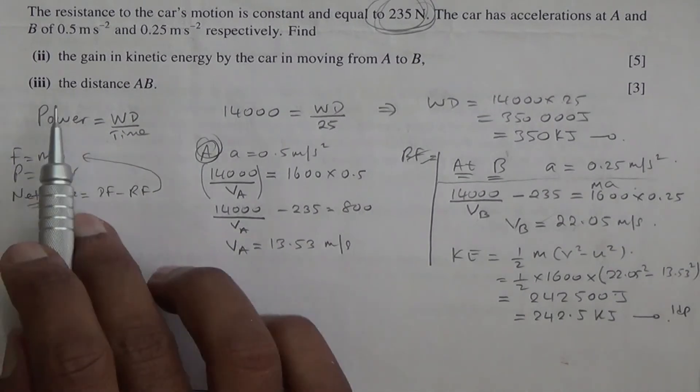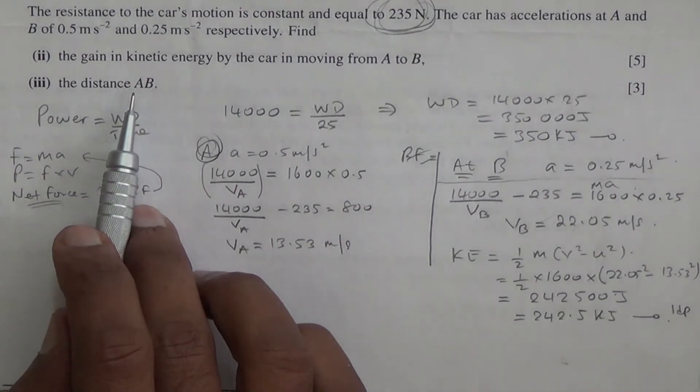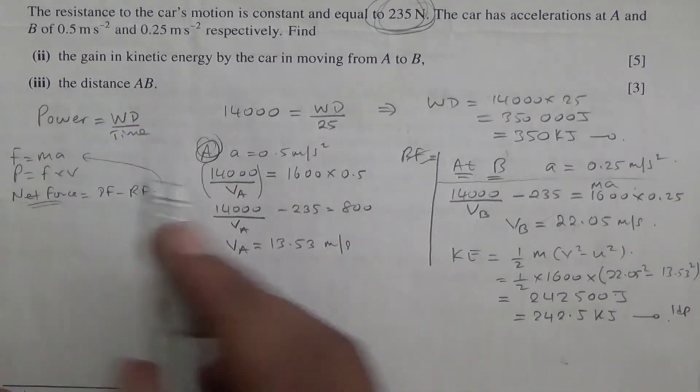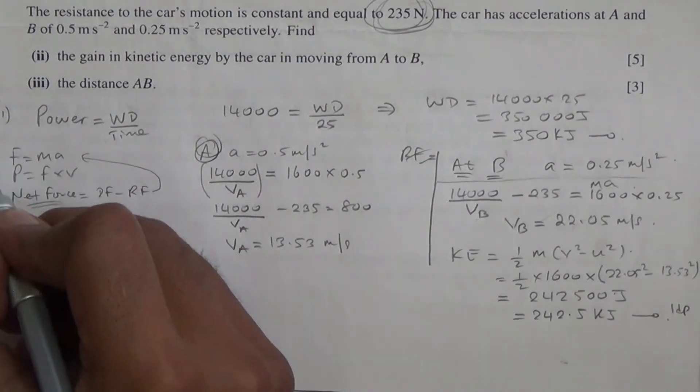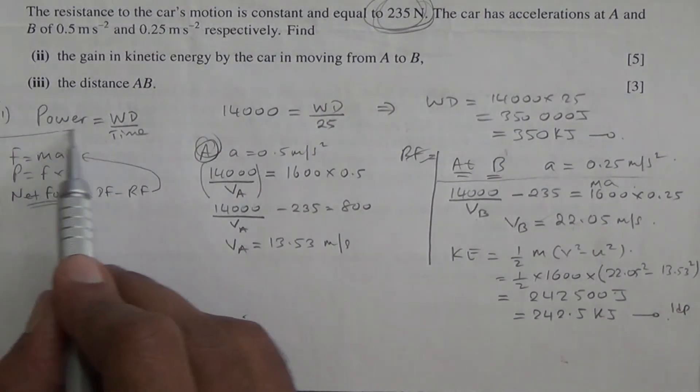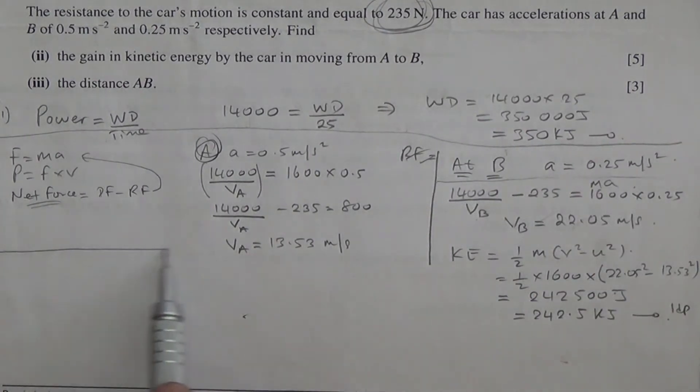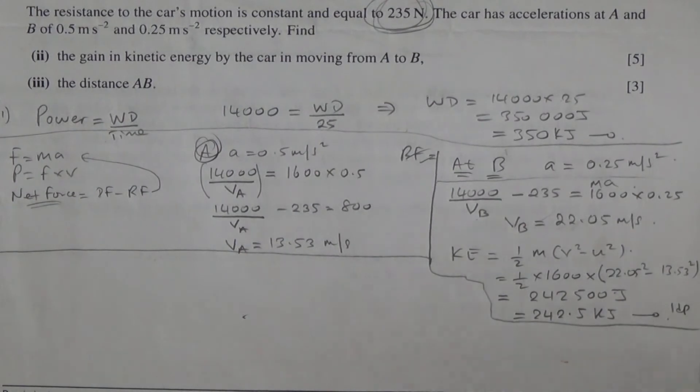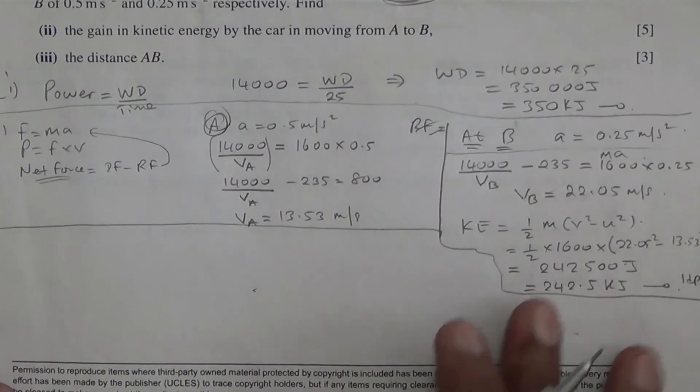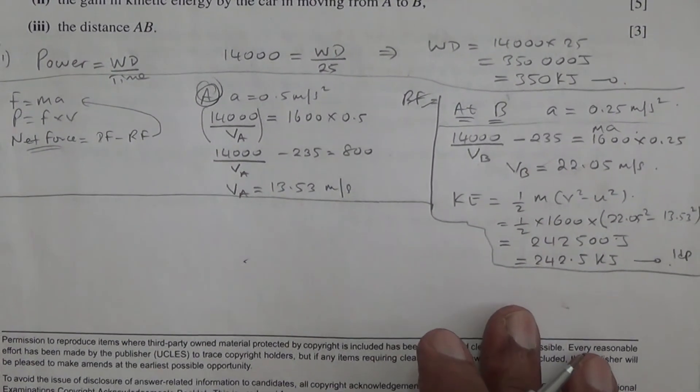Now for the third part of the question, we need to find the distance AB. How are we going to find the distance AB? Just section this away just not to create any confusion. And we're going to squeeze up the third part here in this space. We're going to do it by work power energy.